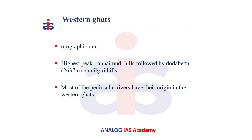The Western Ghats cause orographic rain by forcing the rain-bearing moist winds to rise along the western slopes of the Ghats. The highest peak of Western Ghats is located in Anamudi Hills, followed by Doddabetta Peak in Nilgiri Hills.